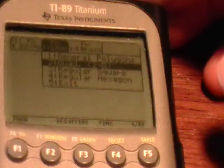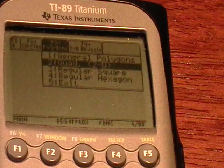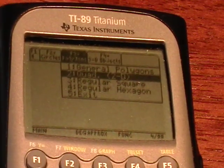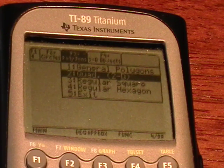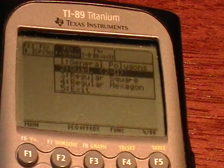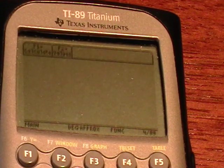We first recognize that we're working with a two-dimensional quadrilateral square. We want to pull up that option under the Polygons tab of the SAT operating system. That is number 2, so we'll go ahead and enter.